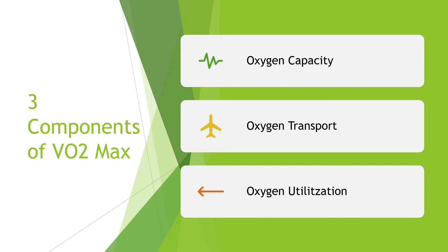There are three components of VO2max. We have oxygen capacity, oxygen transport, and oxygen utilization. We're going to talk about each one.